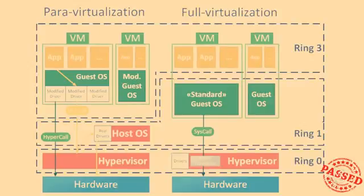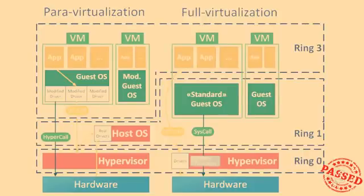Full virtualization provides a complete simulation of the underlying hardware, allowing the execution of unmodified operating systems into virtual machines. It requires that every salient feature of the hardware be reflected into every one of several virtual machines. In full virtualization, machine language code of the guest OS is converted into the machine language code of the host through a binary translation process. Unfortunately, the speed reflects this additional step.